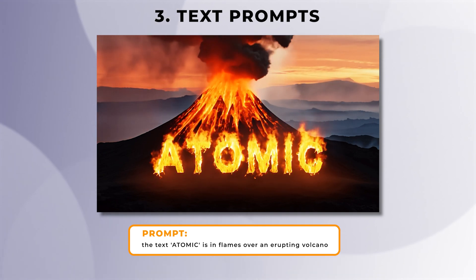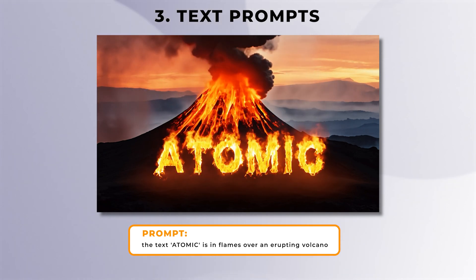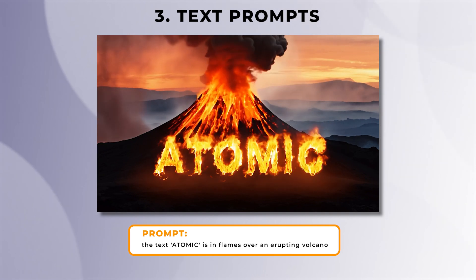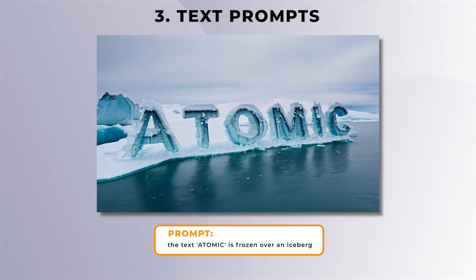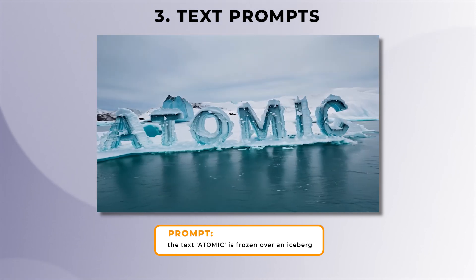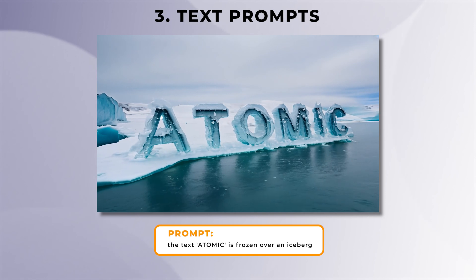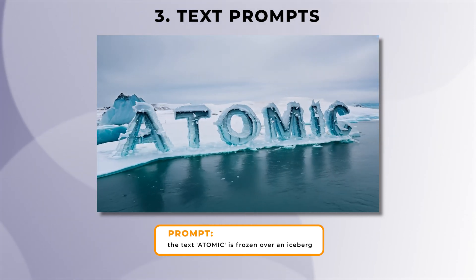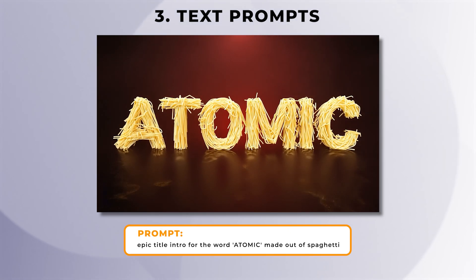For this one, I used a much shorter prompt, with the text 'atomic' in flames over an erupting volcano. It's got some awesome flame simulation going on. And here's another one, but this time with frozen writing, and it's added in a really nice cinematic camera movement to it. It's pretty impressive that it adds the reflection of the text in the water as well. And I really like this one — it's an epic title intro for the word 'atomic', but made out of spaghetti, and I really like the way the spaghetti animates into the scene to create the word.